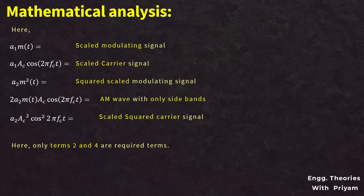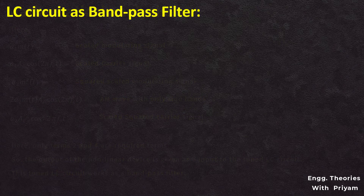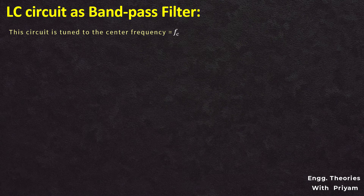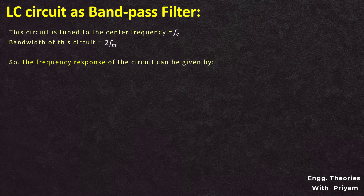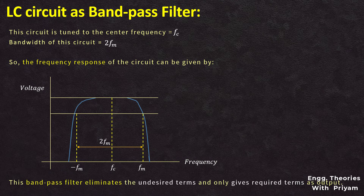To acquire the desired terms, the output is passed through a bandpass filter constructed with an LC tuned circuit. The LC tuned circuit is tuned to the center frequency fc and has a bandwidth equal to 2·fm. The frequency response of this circuit has a minimum allowable frequency of −fm and a maximum allowable frequency of +fm, constituting a bandwidth of 2·fm.